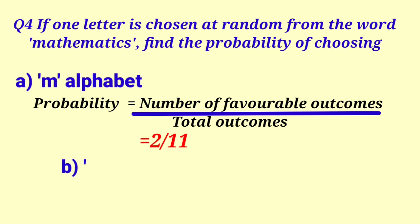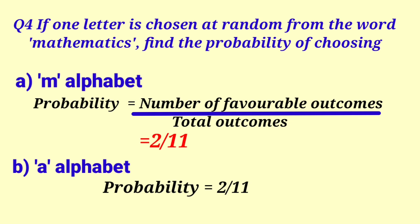Similarly, part B, we have to find the probability of choosing A alphabet. Now probability, again favorable outcomes upon total outcomes. A is also repeating here 2 times. And total letters in mathematics, 11. So answer is 2 by 11. Do you agree with me?